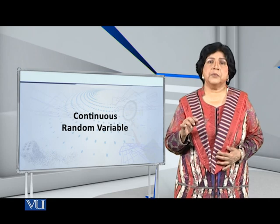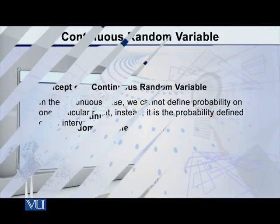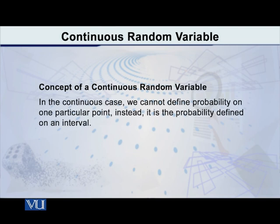For a continuous random variable, the situation is very different. In the continuous case, we cannot define probability on one particular point. Instead, probability is defined on an interval. A continuous random variable is the one we encounter when we are measuring things.